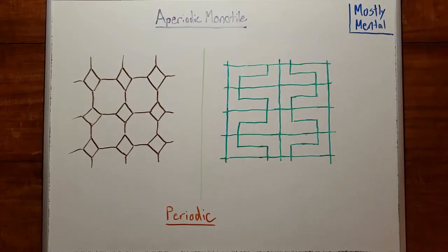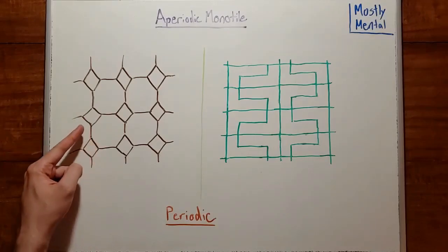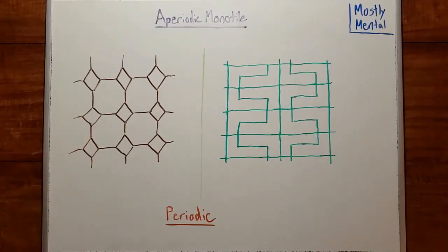First, let's define our terms. A tiling is a covering of the plane with a set of shapes so that every point is covered and the pieces don't overlap. So this and this are tilings, assuming they extend out forever in all directions. We're allowed to use more than one kind of shape, like these octagons and diamonds, and pieces can be rotated or reflected to fit, like these L shapes here.